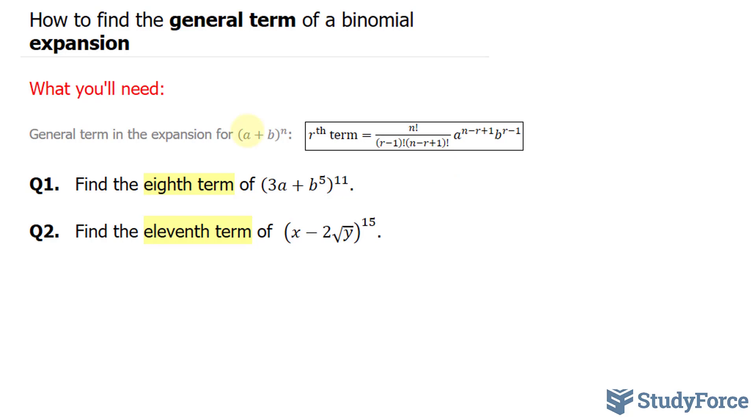Let's start by defining two very important things. R, in our case, will be 8. That's the term we're looking for. n is equal to 11. In addition to that, you need to define both your a and your b term as well. Your a term will be 3a, and your b term will be b to the power of 5.